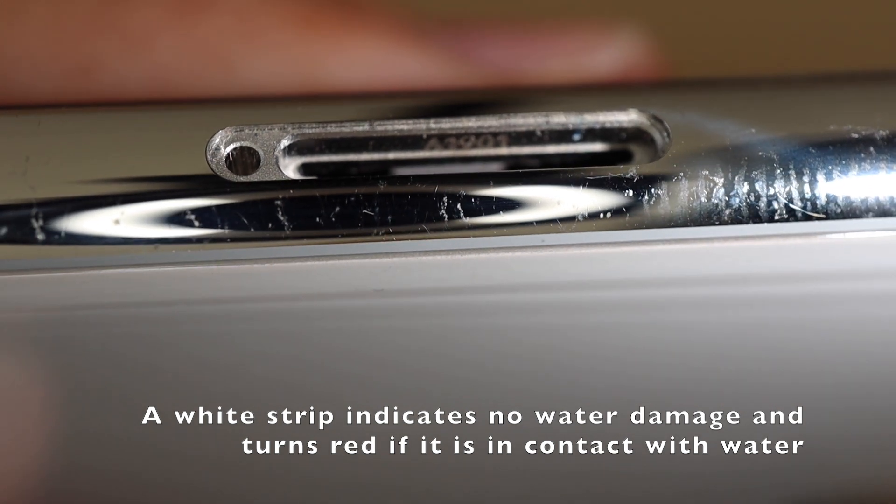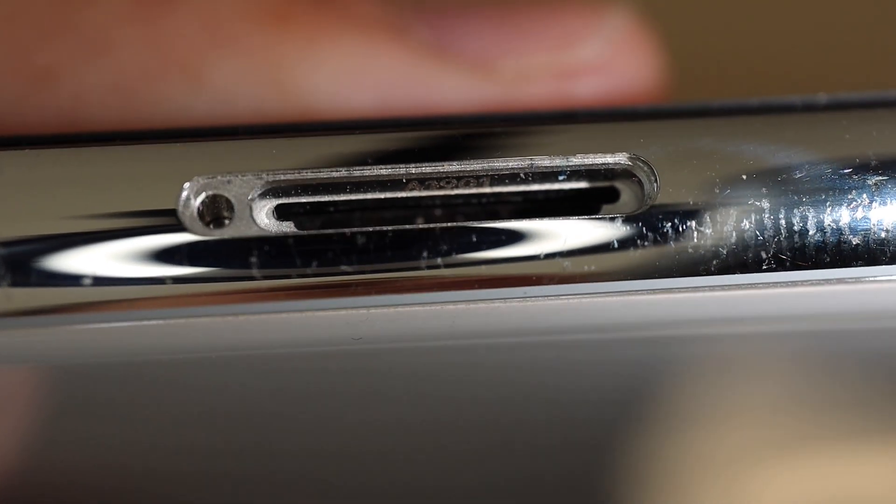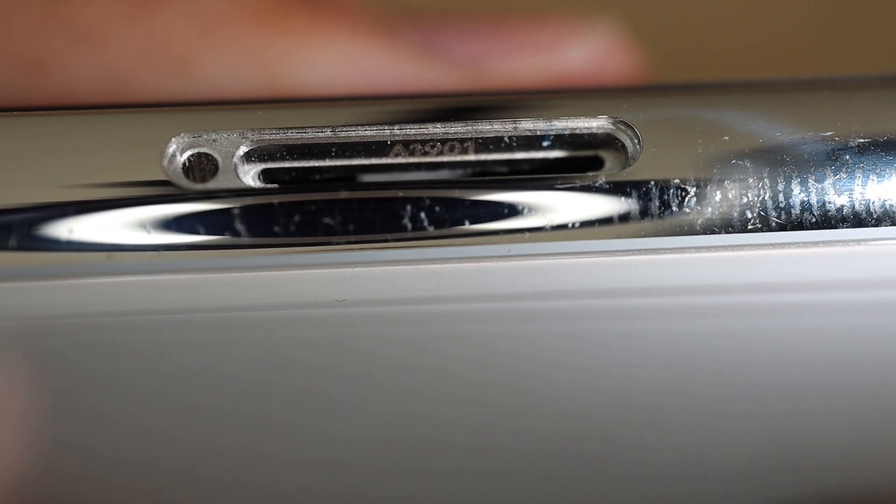If this indicator is white then it means that no water has come into contact with the strip and since the SIM card tray is the most vulnerable place on your iPhone for water to enter and is the closest to the logic board, which is the most sensitive part, it is safe to assume that your iPhone has not been water damaged.